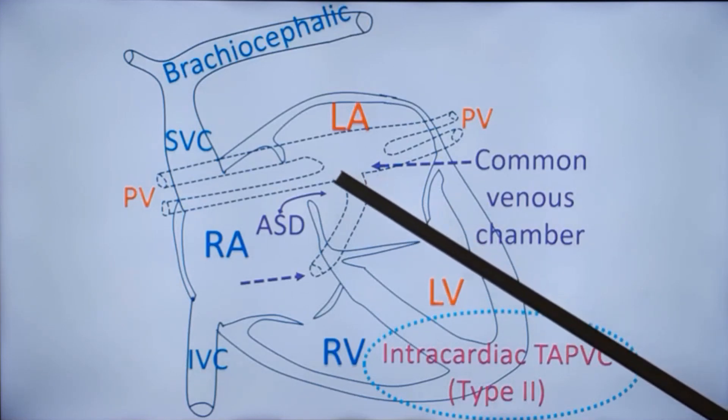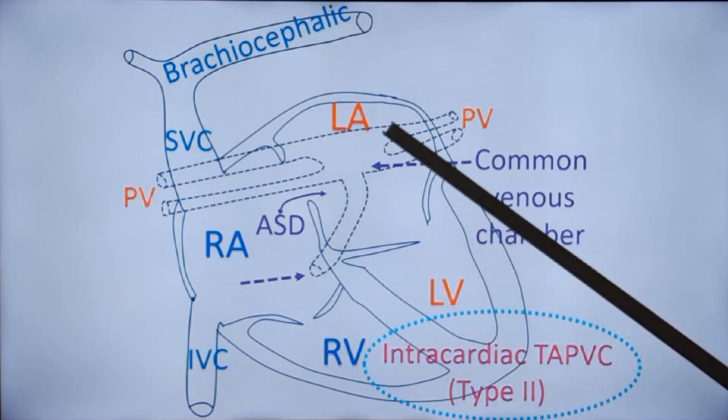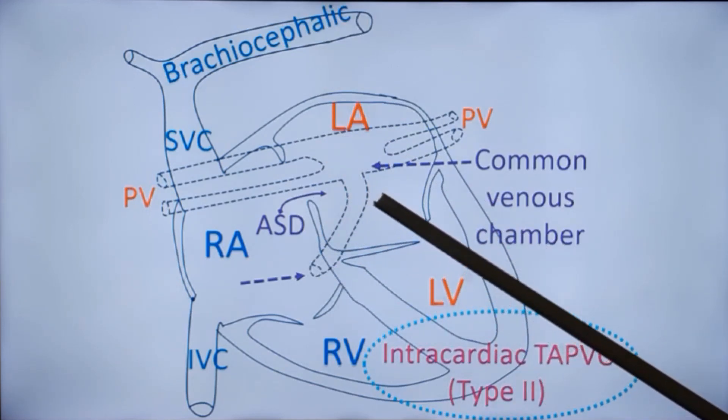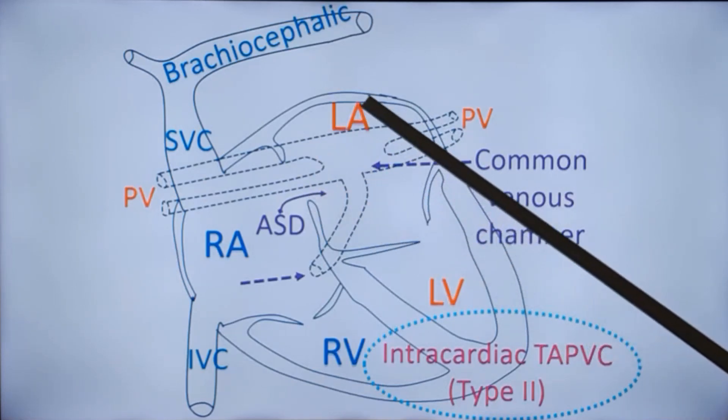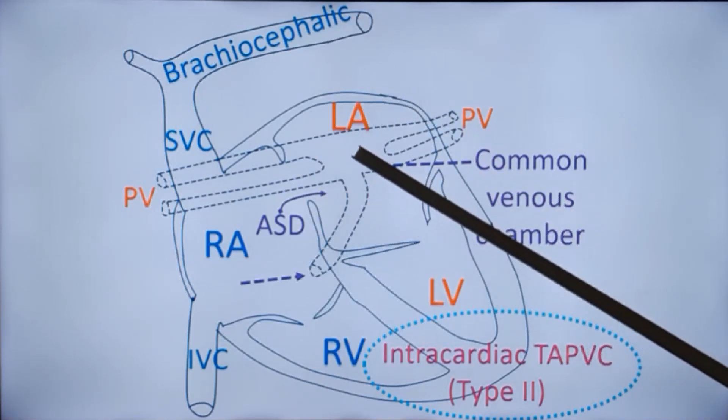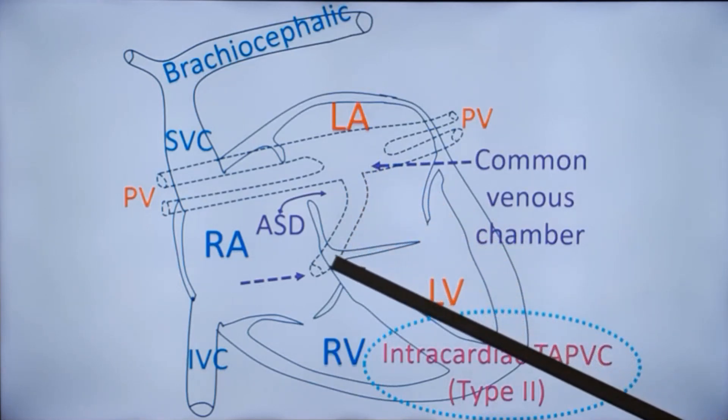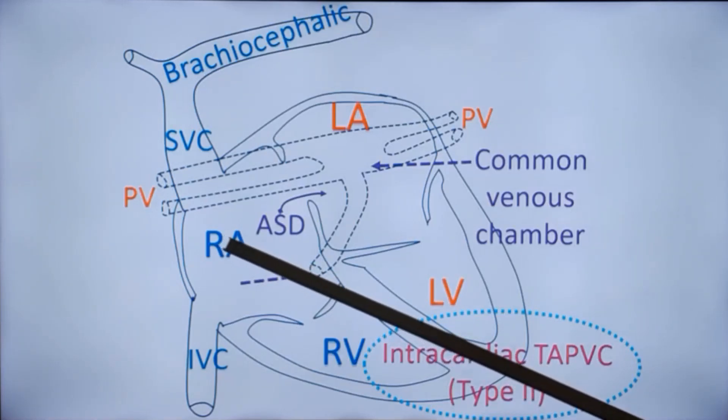When you do an echo, as in the previous case, the common venous chamber will be seen posterior to the left atrium. But the opening from the common venous chamber into the left atrium will not be visible. Instead, the common venous chamber can be traced into the coronary sinus, and further color Doppler will show blood flow into the right atrium. That is the Intracardiac variety of TAPVC, type 2, draining into the coronary sinus.